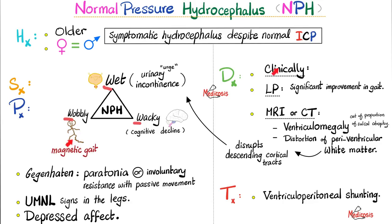How can I make the diagnosis? Clinically, and you perform a lumbar puncture. In many patients there is dramatic improvement in symptoms — especially gait symptoms — once you tap the fluid out of the subarachnoid space. If this happens, the patient is likely to respond to a surgical intervention known as ventriculoperitoneal shunting.